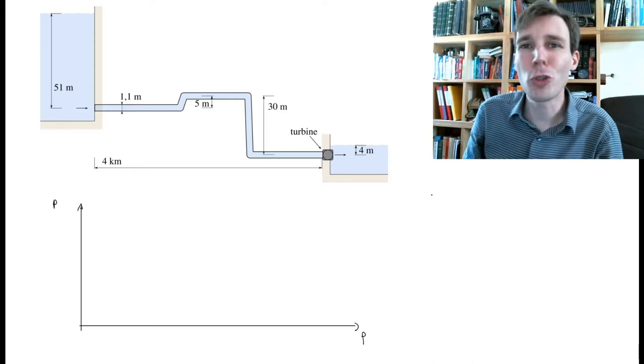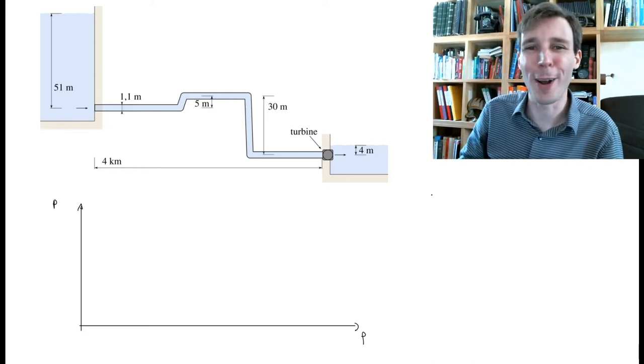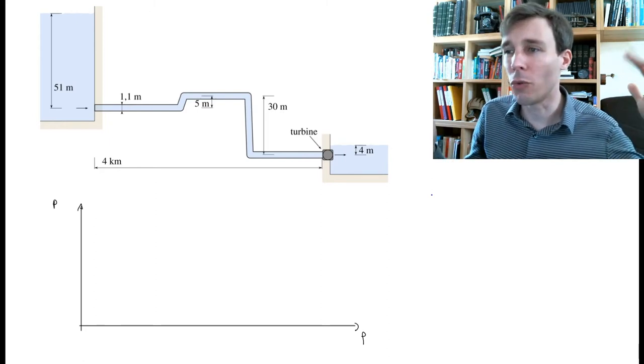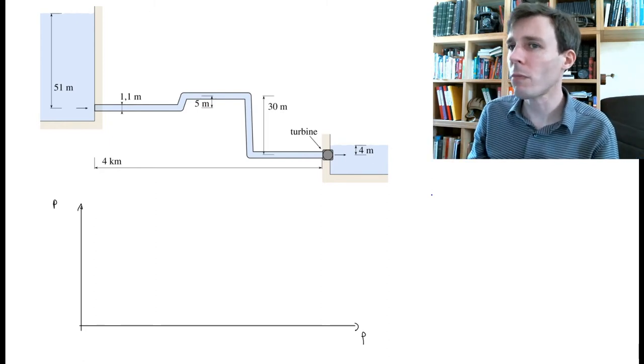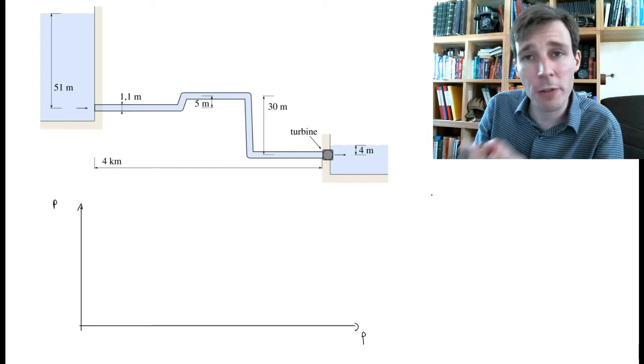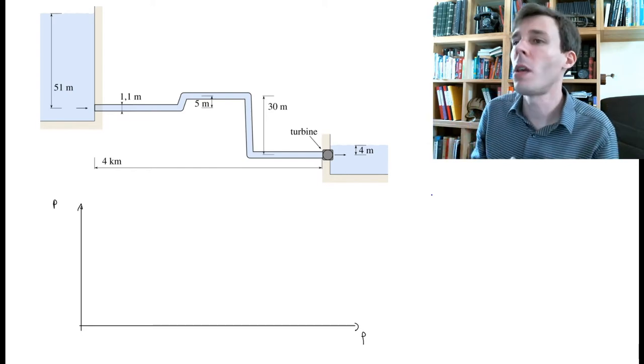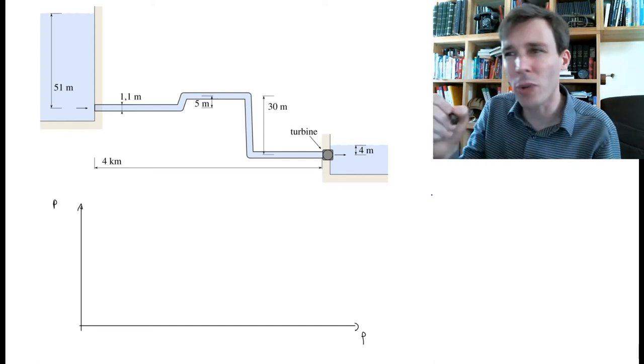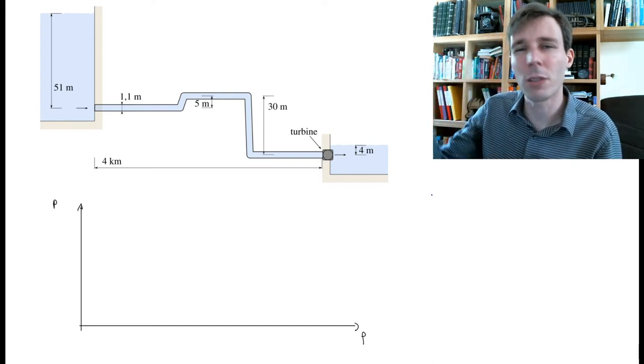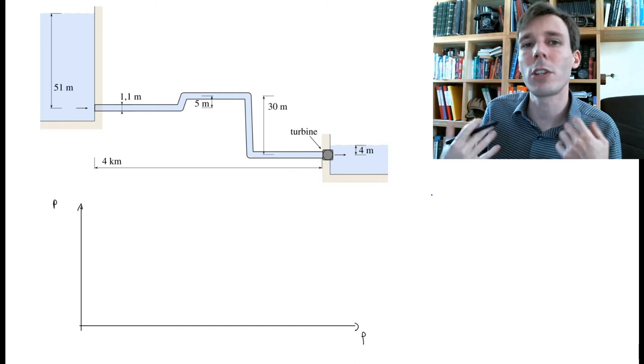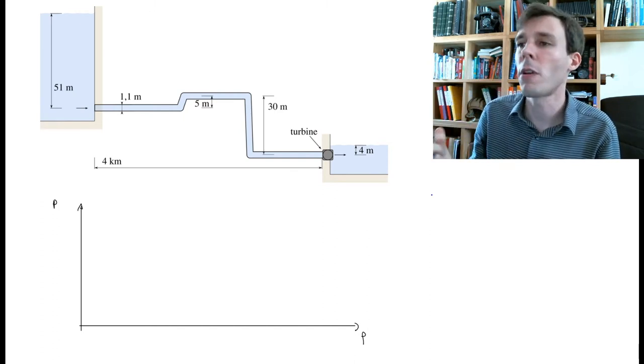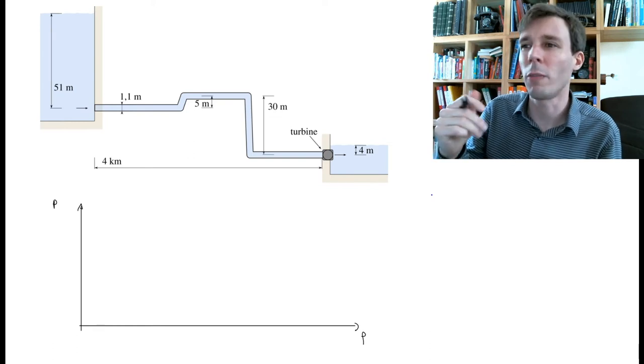We complete our tour of this problem where a pipe feeds a turbine with water flowing between two reservoirs by trying to plot the pressure distribution along the pipe. We want to do this not in a quantitative way with very precise values and positions, but in a qualitative way, seeing the basic shape of the curve without worrying about plotting it precisely.